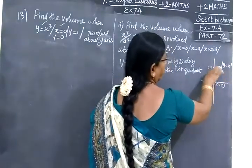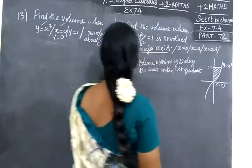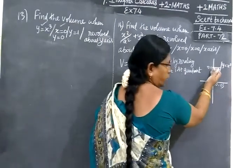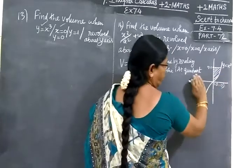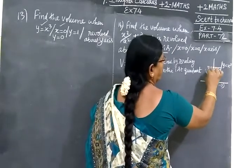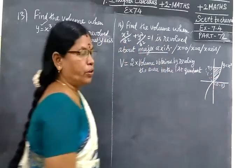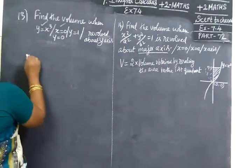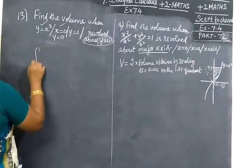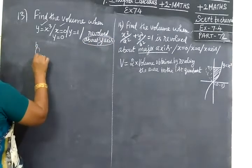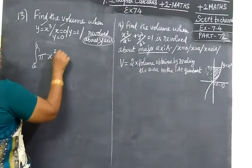We revolve about the y-axis. With respect to the y-axis, we revolve. So we have drawn. Further, we are going to find the volume. Since we're revolving about the y-axis, I will take the formula: integral from a to b of π x² dy.